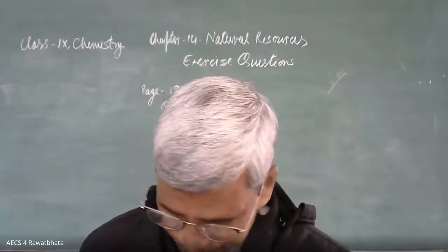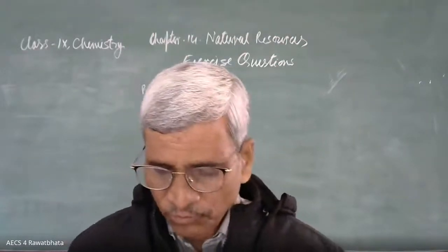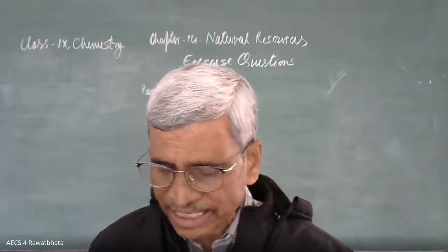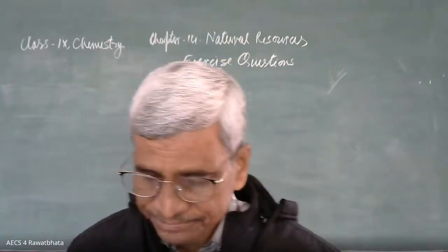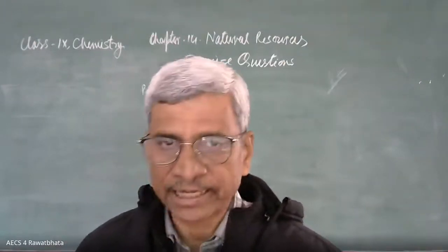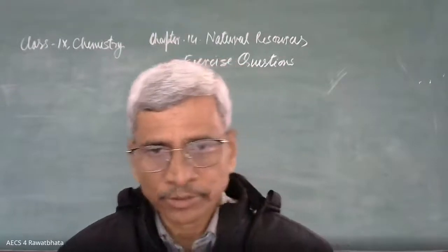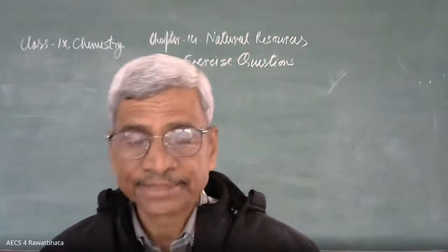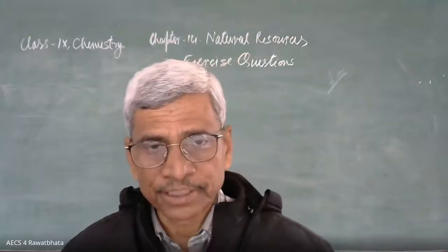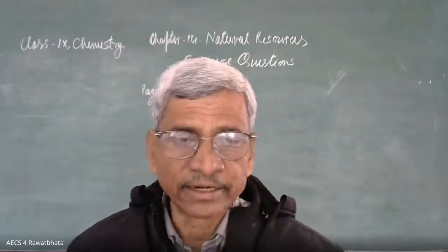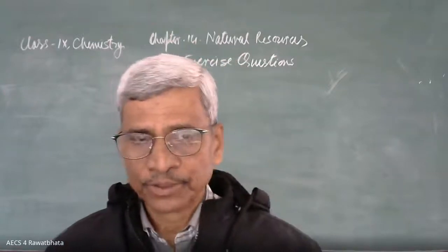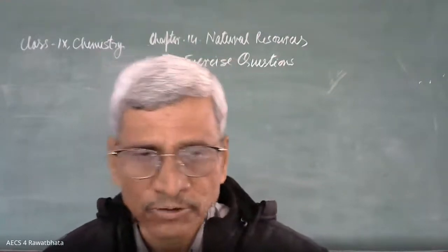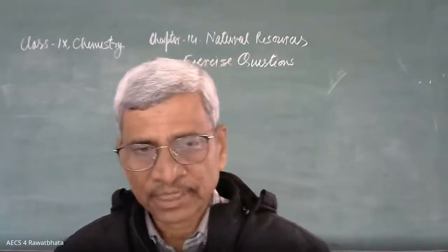Page 201: What are the different states in which water is found during the water cycle? Water goes from liquid state in water bodies to vapor state through evaporation, reaches the atmosphere, forms clouds, and returns to the ground as rain. So the two states are liquid and gas.